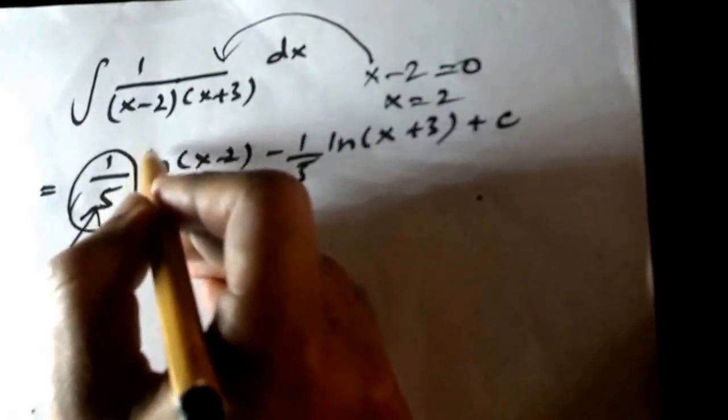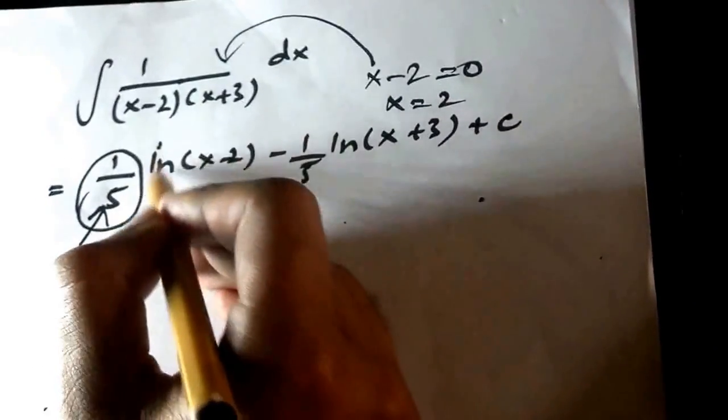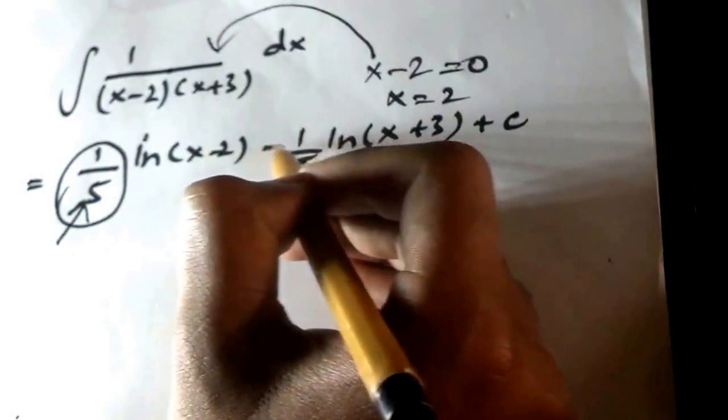And always next to the equation I will write ln and then the factor which I was solving x minus 2.